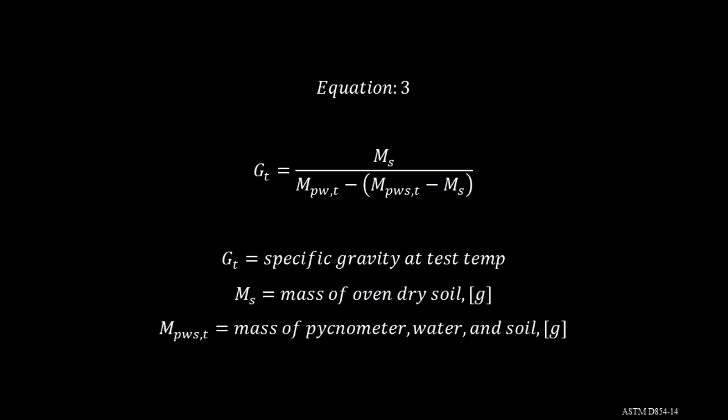Equation 3 states that the specific gravity at test temperature equals the mass of the oven dry soil over the mass of the pycnometer and water at test temperature subtracted from the mass of the pycnometer, water, and soil at test temperature minus the mass of the soil.